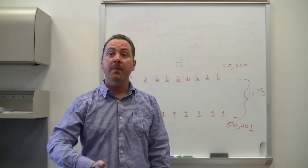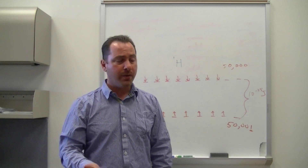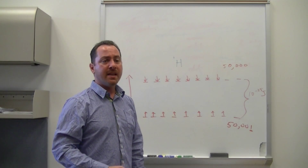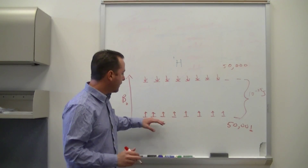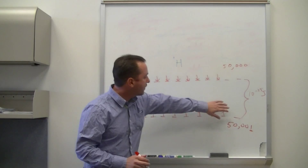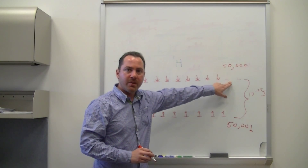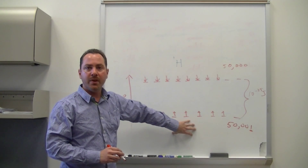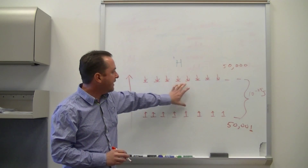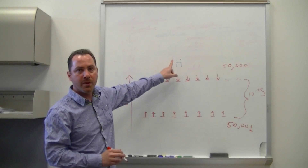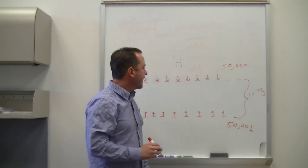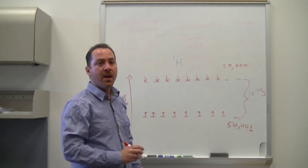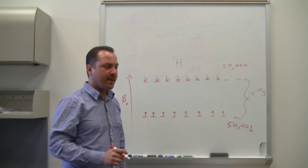To do an NMR experiment you require a lot of sample. This insensitivity can be circumvented by increasing the magnetic field. If you increase the magnetic field, you increase the energy gap between the two levels, which increases the population of the lower level. If the gap is small, thermal energy allows the excited state to be almost equally populated.